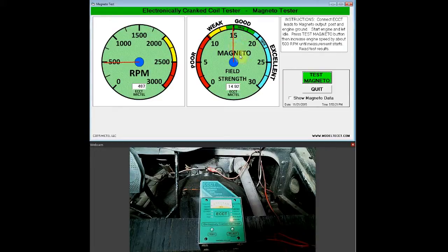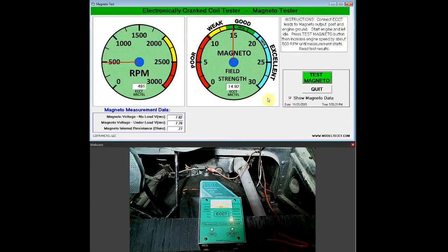For the numerical value of the field strength, you can read it off the bottom of the scale here at 14.92. If you're interested in seeing the voltage output of the Magneto, you can click on show Magneto data here and a new window will pop open and show you the Magneto voltage under no load and under load conditions.